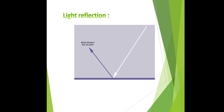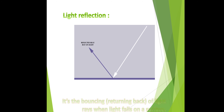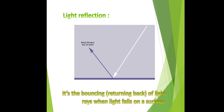Light reflection: you cannot see without light — there must be light to see. When light falls on an object, it reflects to our eyes and we see the object. Light reflection is the bouncing or turning back of a light ray when it falls on a surface.